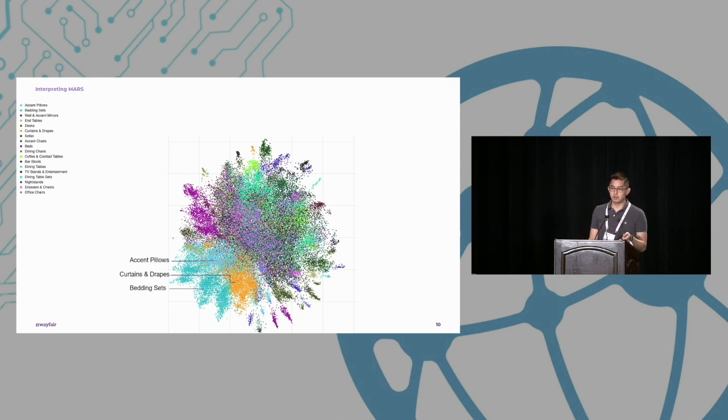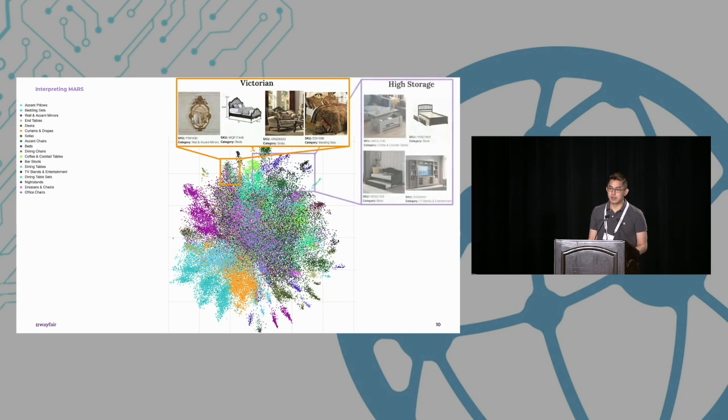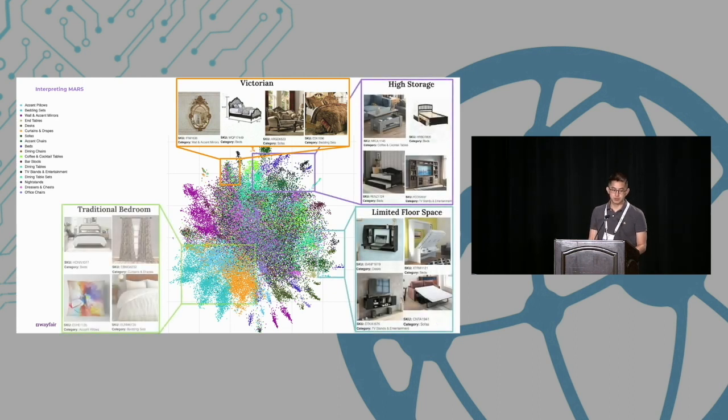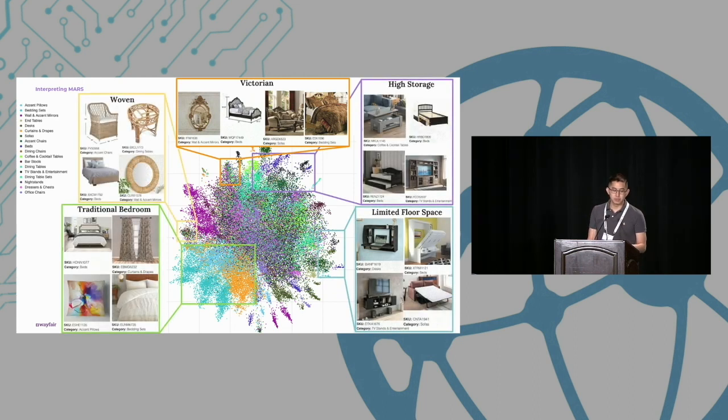For example, in the bottom left, you can see that pillows and curtains and bedding sets are all grouped together because they are presumably commonly co-browsed types. Additionally, you can see that there are areas of the chart where there are many different colors, which means that there are many different types of furniture being clustered together, and these are being clustered on different attributes other than category. For example, style, functionality, or material.